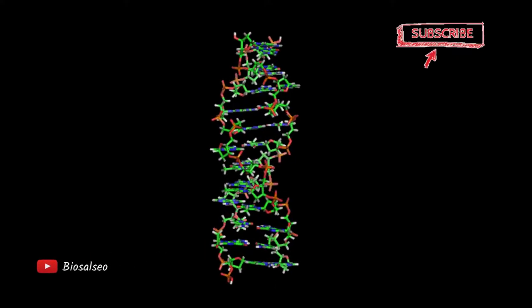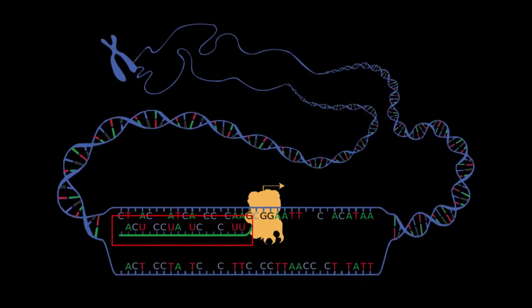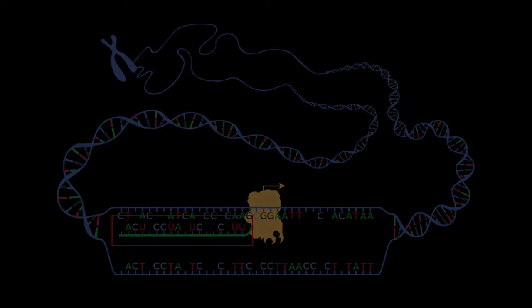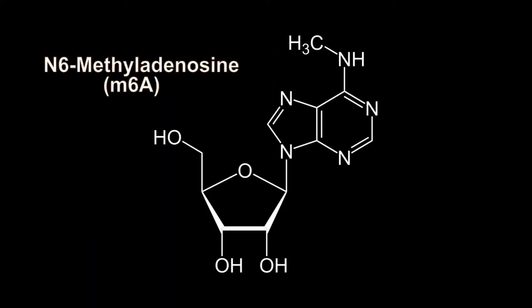When a chain of DNA is transcribed, a molecule of RNA is obtained. Over a hundred types of chemical modifications have been identified in cellular RNAs. The most important one is called N6-methyladenosine or M6A that mainly affects the mRNA.